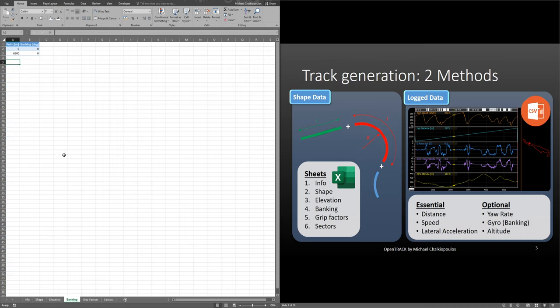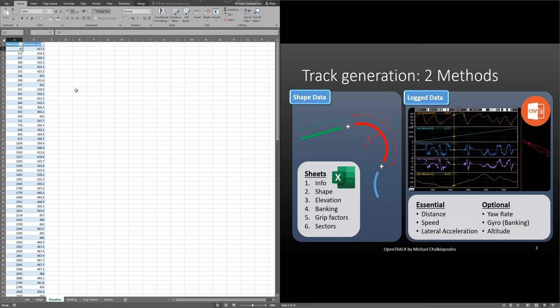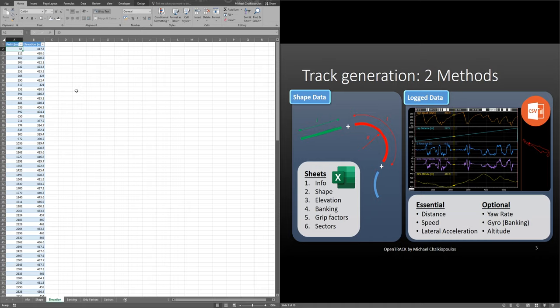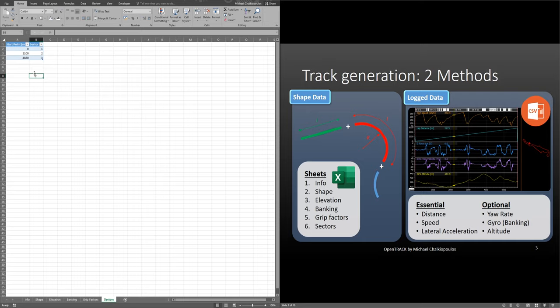In the elevation and banking sheets, you input the position in the A column and the value for the elevation and banking in the B column. The same applies for the grip factors. In the sector sheet, you type in the starting point of each sector and the sector number.